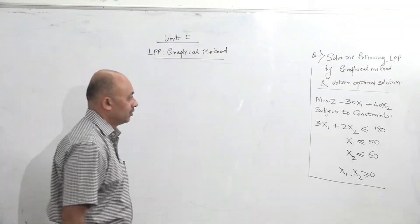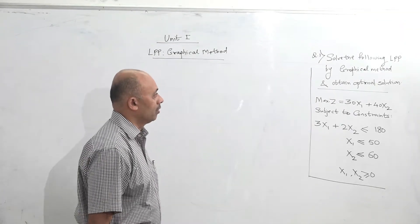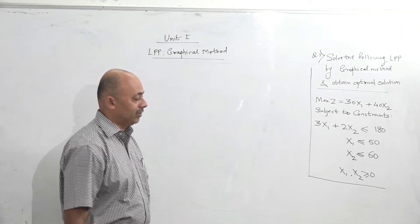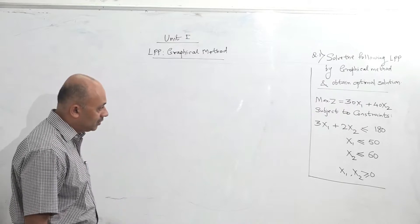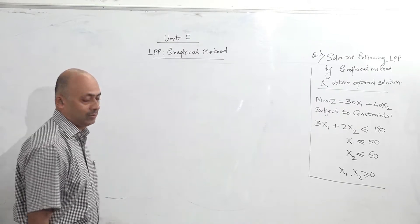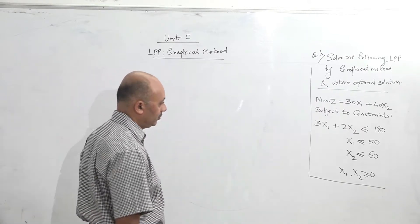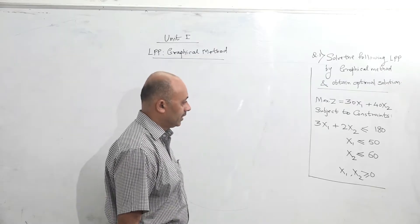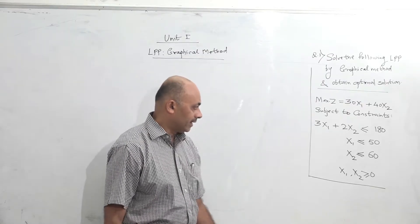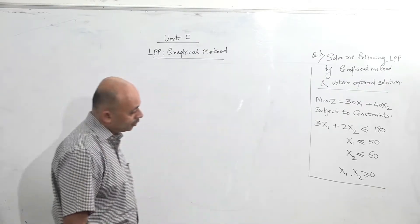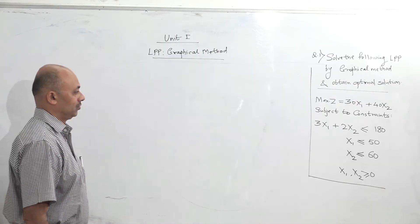Now this is the question given to us: solve the following LPP by graphical method and obtain the optimal solution. Max Z is equal to 30x1 plus 40x2, subject to constraints: 3x1 plus 2x2 less than or equal to 180, x1 less than or equal to 50, and x2 less than or equal to 60.